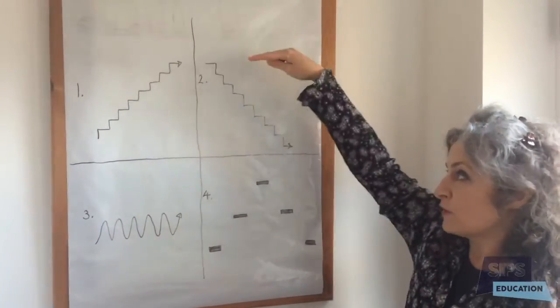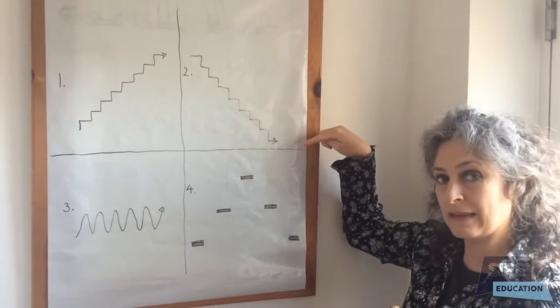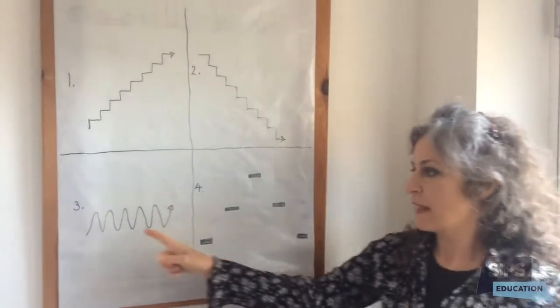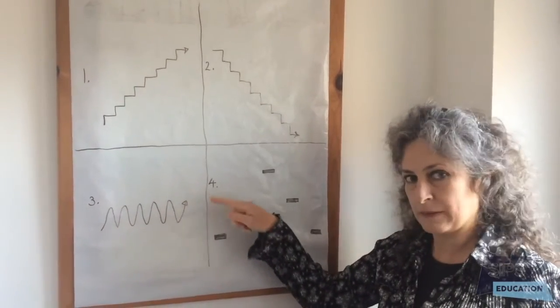In picture number two we've got a staircase again but this time I think we're coming down the staircase. In picture number three we've got this wavy line that goes up and down, up and down, up and down.